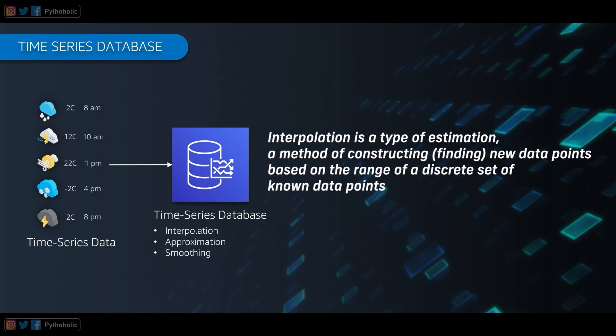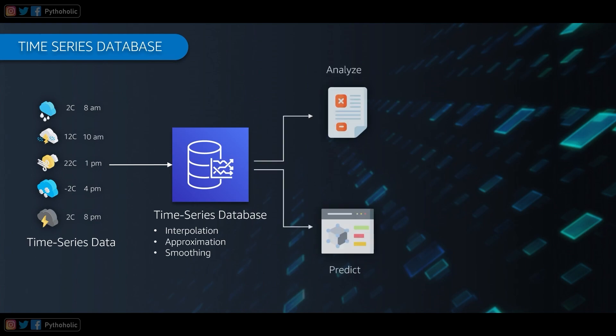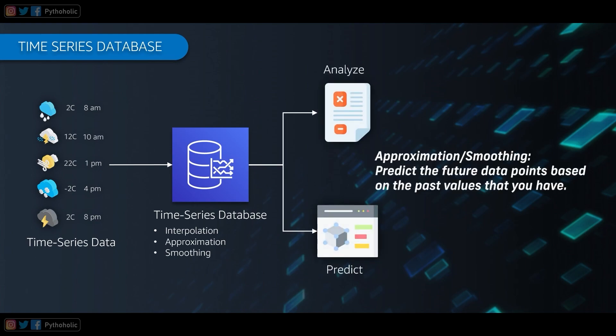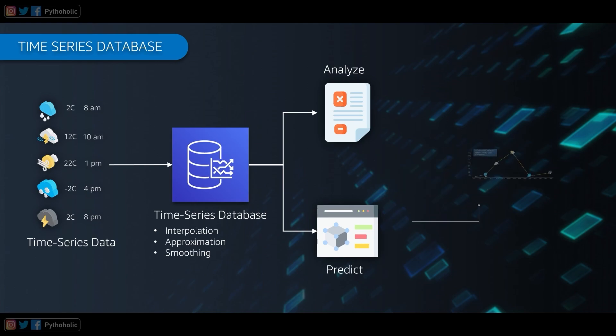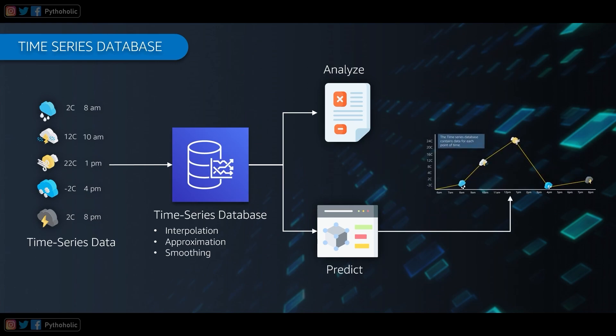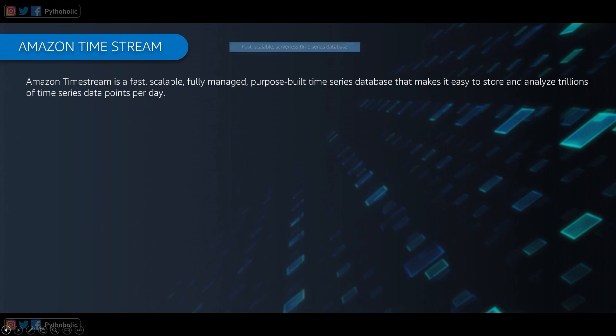Smoothing and approximation are also techniques for time series forecasting, where you predict future data points based on past values. Mostly we do a weighted average of values based on the observations we have. These are some of the functions and algorithms used as part of the time series database to provide data and outcomes which can be used for analysis and prediction, and thus we get the data for our application.